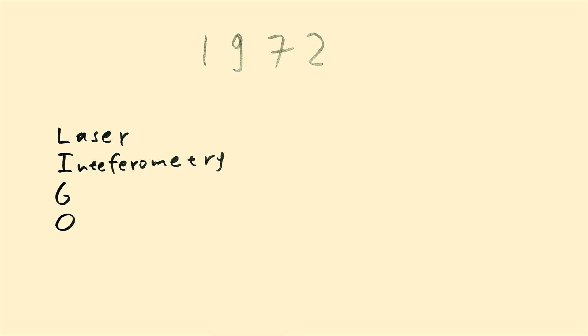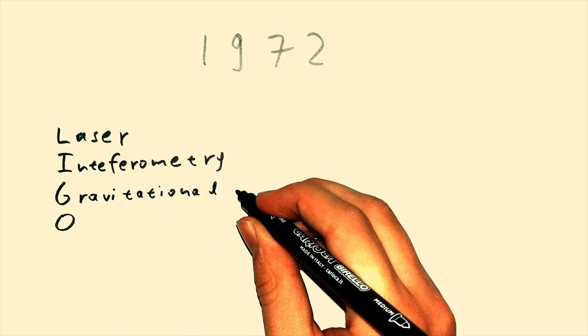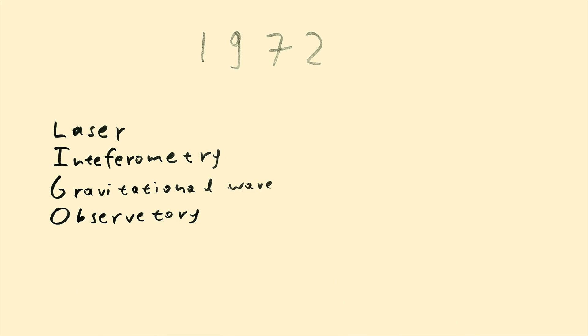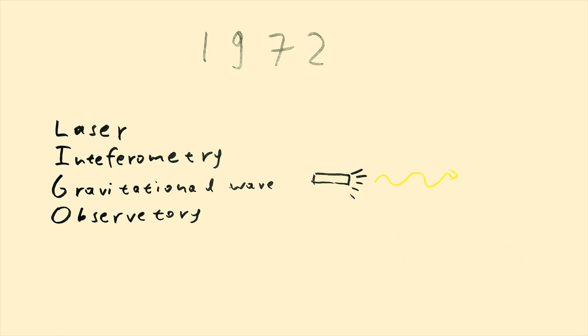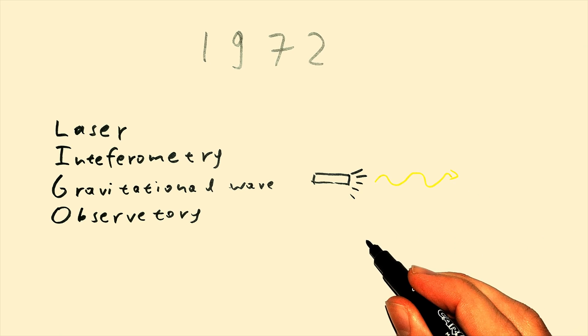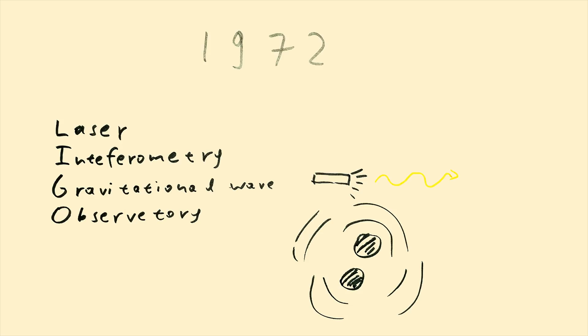LIGO. Laser interferometer gravitational wave observatory. Yes, the technology used to measure the speed of light was the same to the one used to detect gravitational waves. Here's how it went.